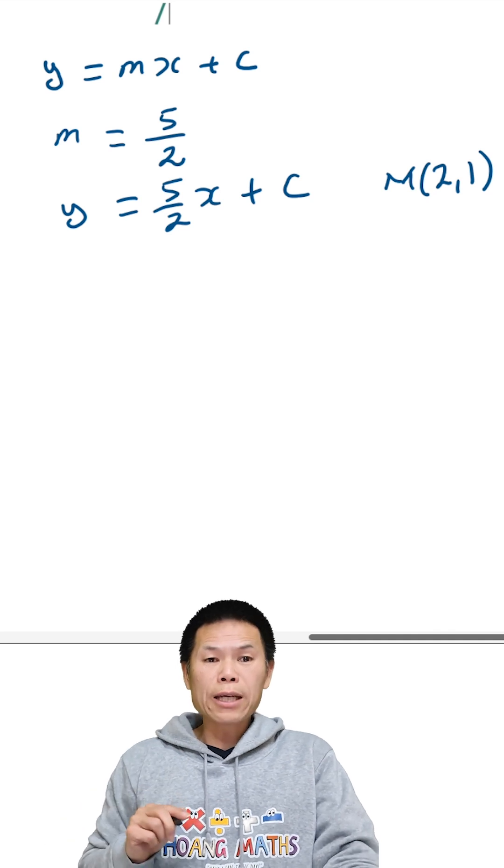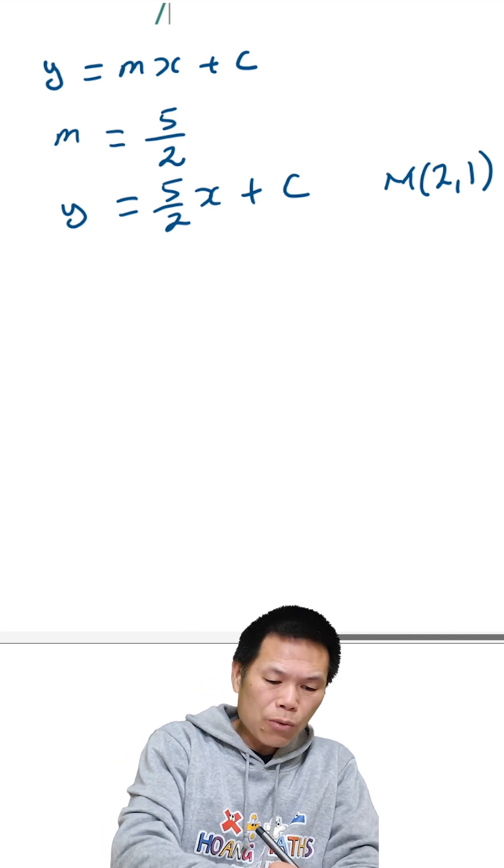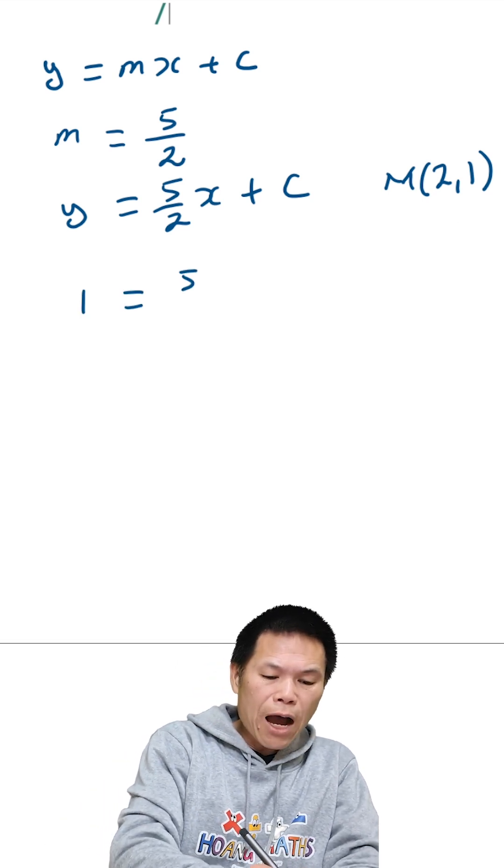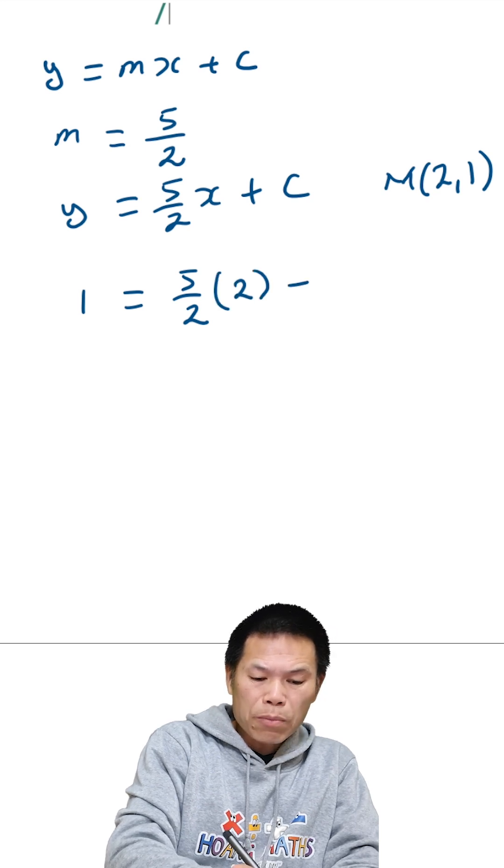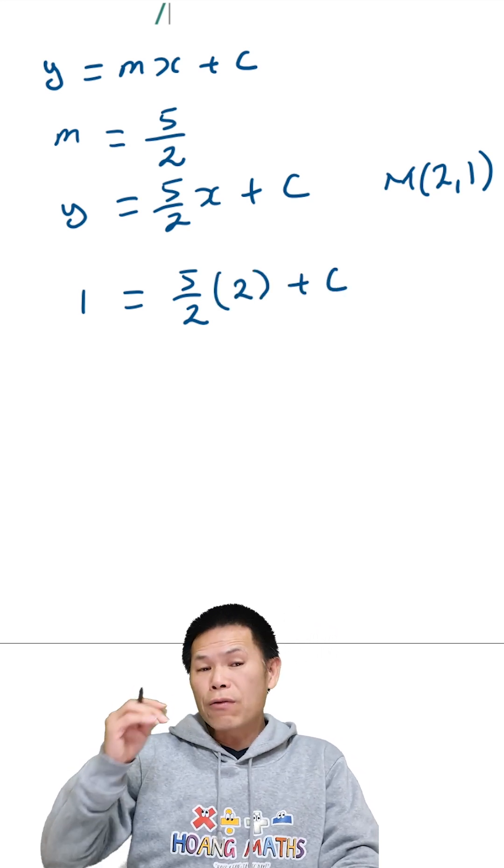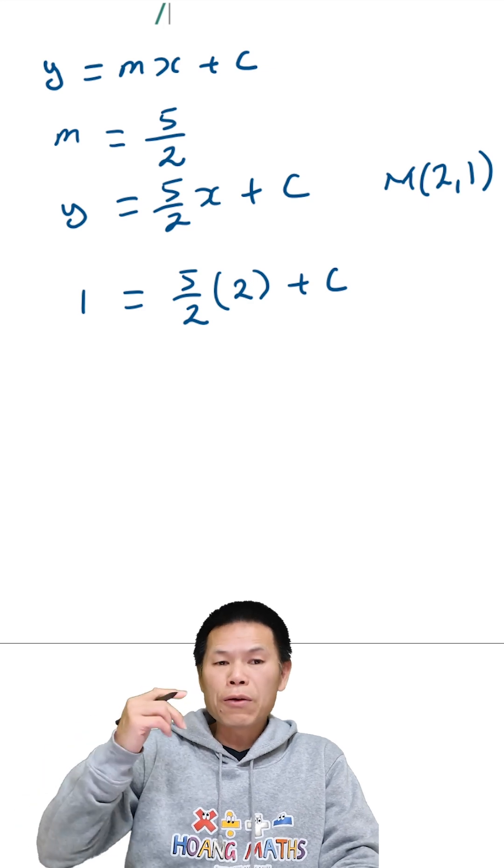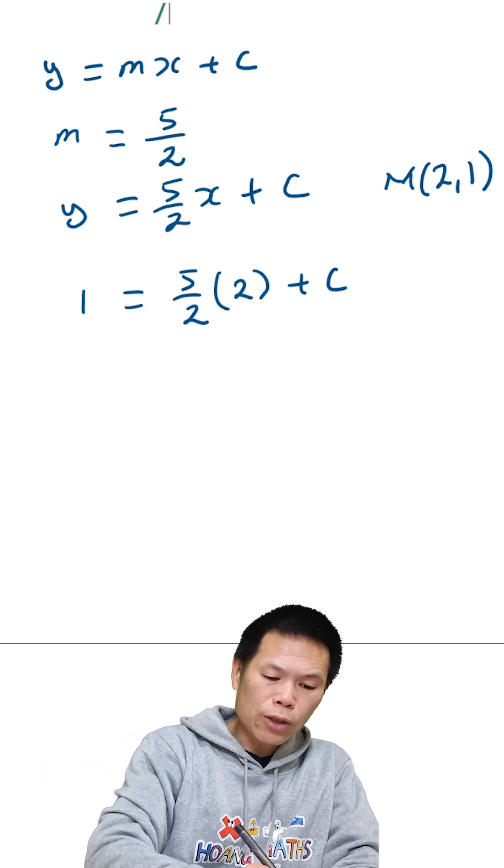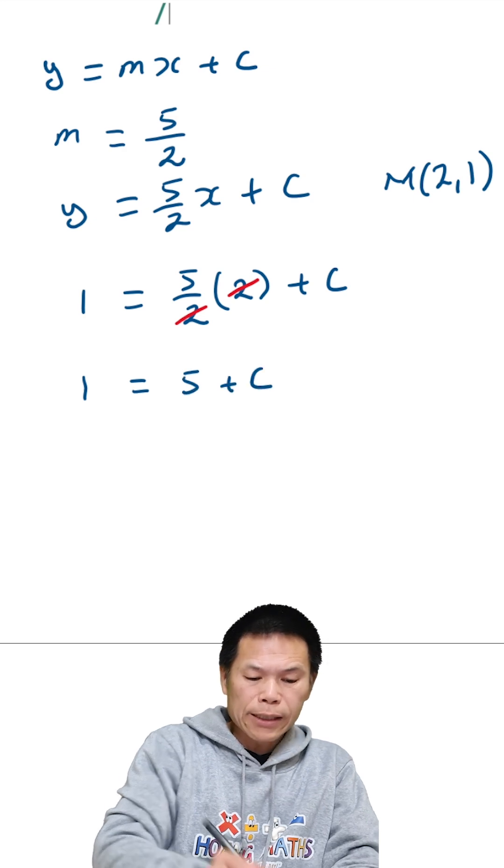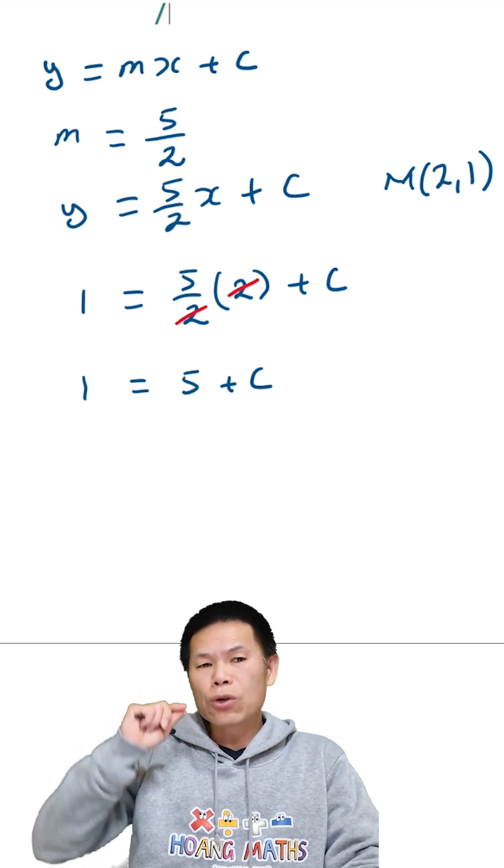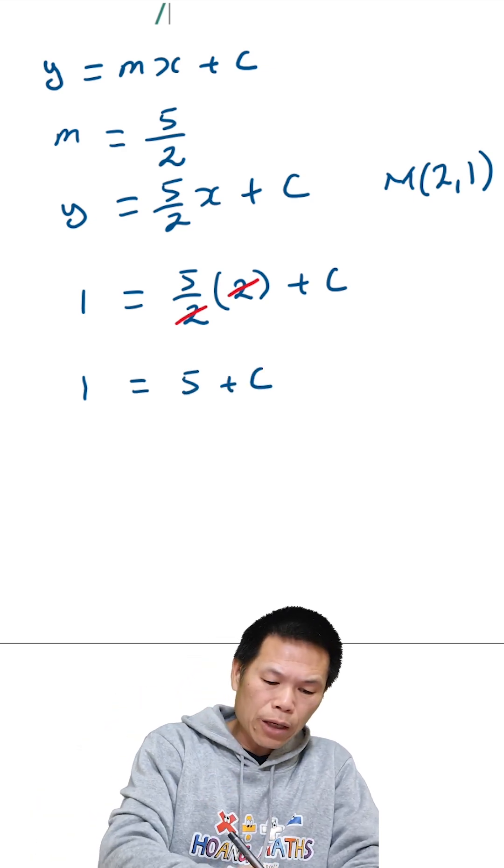When x is two, y is equal to one. So that means one equals five over two times two plus c. Five over two times two gives me five, because these two here cancel out. One equals five plus c, so therefore c is equal to negative four. Otherwise, you can move this to the side: one minus five is negative four.